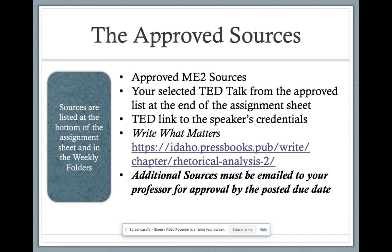For your approved sources — can't reiterate this enough — you can use the approved ME2 sources, your selected TED Talk which will come from the list at the end of the assignment sheet, the TED Talk link to the speaker's credentials, the press book created for this class called Write What Matters, and again additional sources must be emailed to your professor for approval by the posted due date.